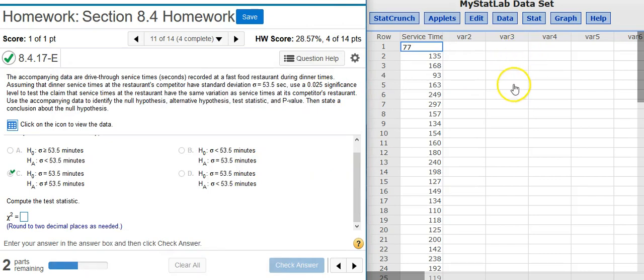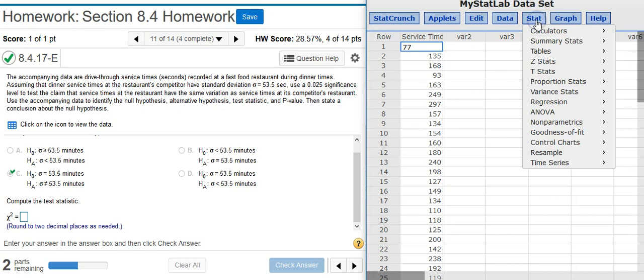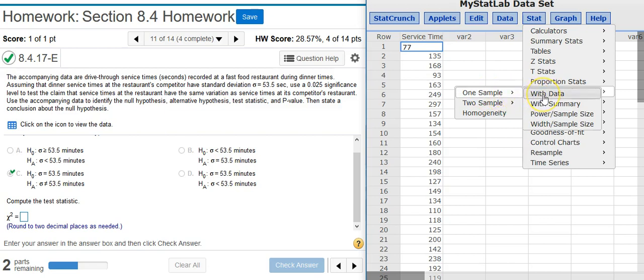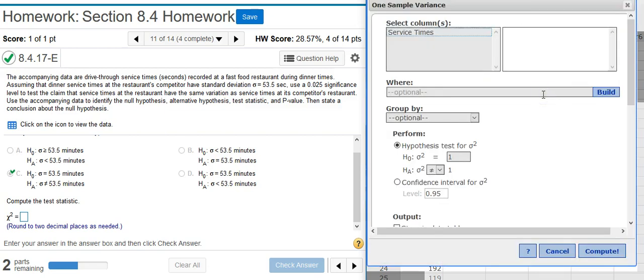Here in StatCrunch, we're going to run our hypothesis test by going to Stat, Variance Stats, because we're looking at standard deviation, and variance is the only option given here in StatCrunch for dealing with standard deviation. One sample, because we've got just the one sample, with data, because we have actual data. Here in the Options window, I'm going to select the column where my data is located, and then I've got to make this area here for hypothesis test match the hypothesis test we got in the previous part. But notice, we're dealing here with variance.